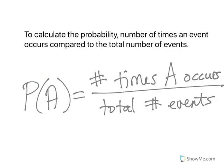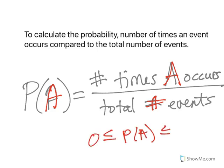So now let's talk about the probability piece. To calculate the probability, we take the number of times something happens or an event happens and compare that to the total number of events. So if we have event A, we would take the total number of times event A occurs as our numerator over the total number of events, and we divide. The probability has to be between zero and one.